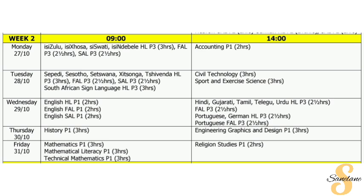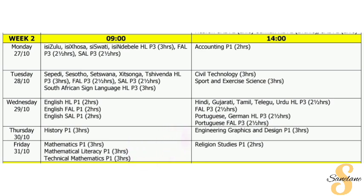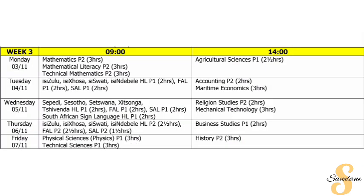In Week 2, we are going to cover the scope for Accounting, and then we are also going to cover English Paper 1. We are going to look at History Paper 1, then we are going to do Mathematics and Math Literacy Paper 1 that you will be writing on Friday. Based on demand, we will also cover Religion Studies Paper 1.